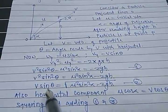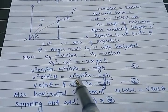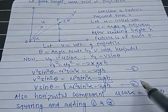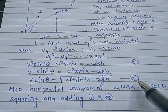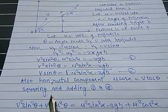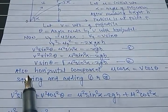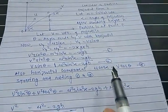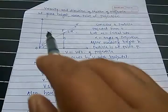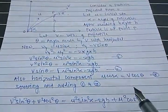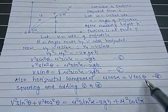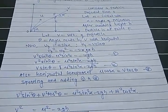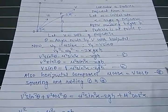Therefore V sin theta = square root of (U² sin² alpha minus 2GH). Label this as equation number 2. Also, the horizontal component of velocity is constant: U cos alpha = V cos theta. Label this as equation number 3.